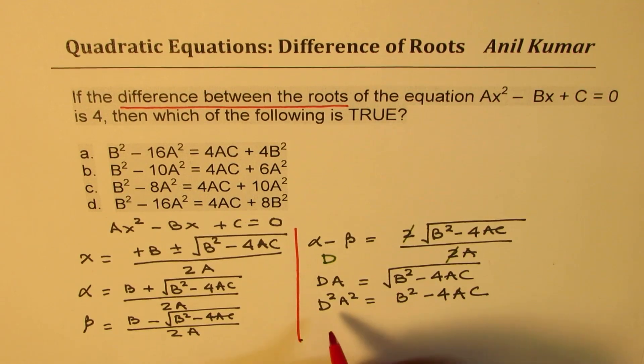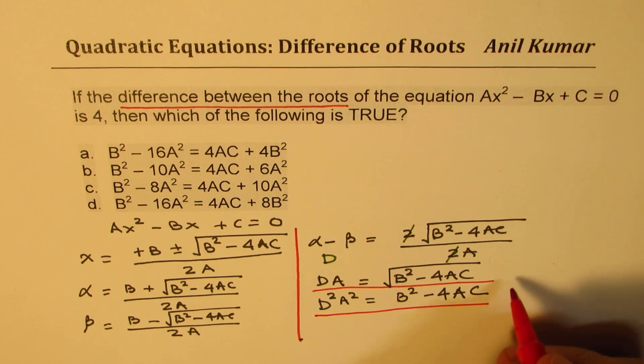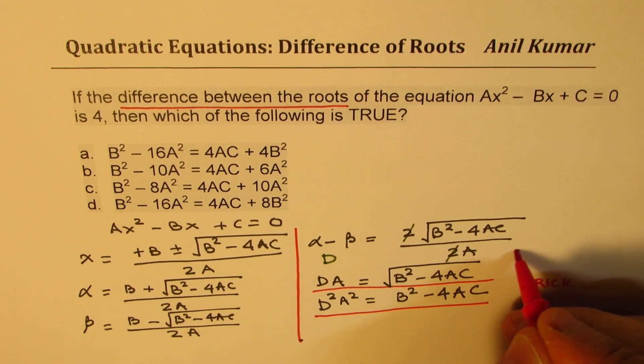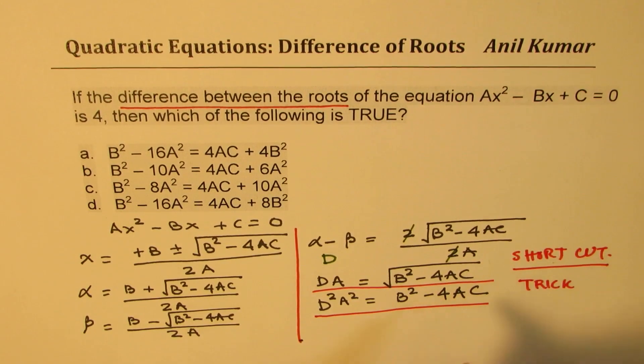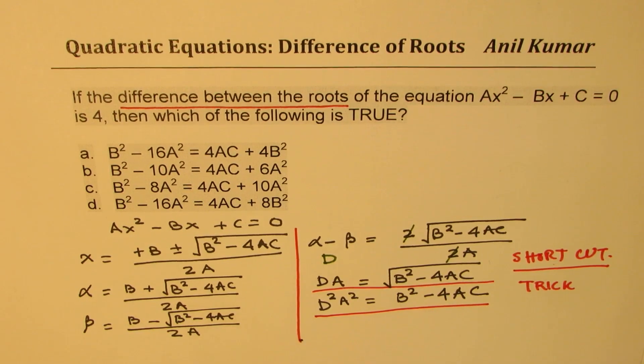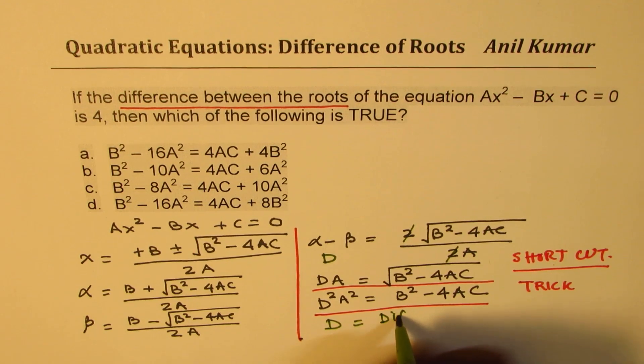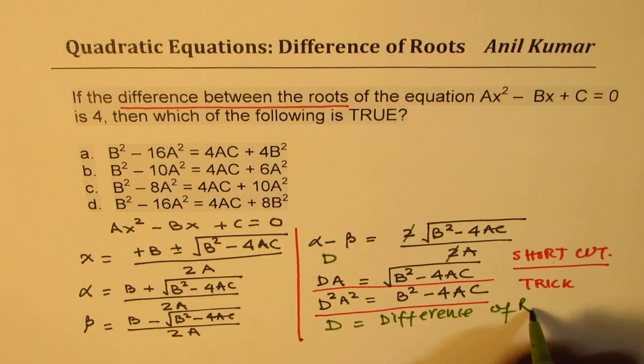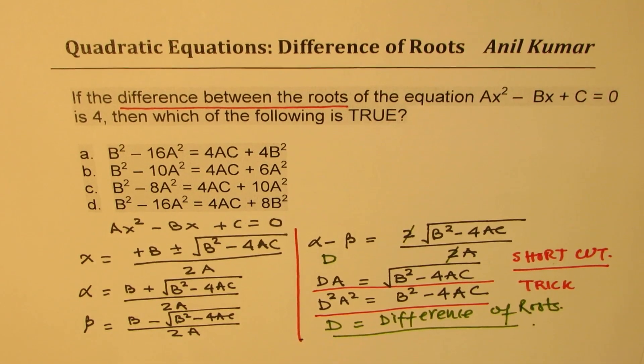Basically, whenever you're given a difference, this is the formula to use. This is your trick or shortcut. Where d, the difference d, is the difference of roots. That is what's important to understand.